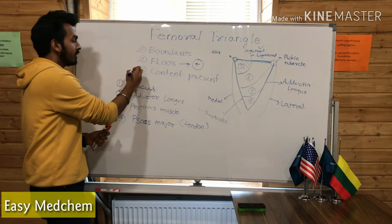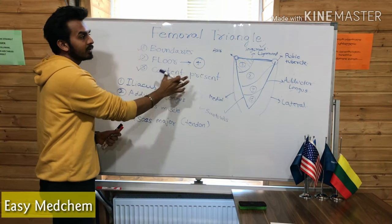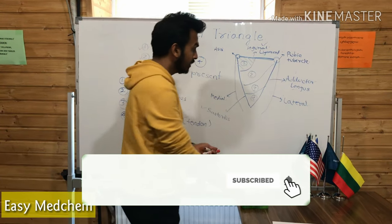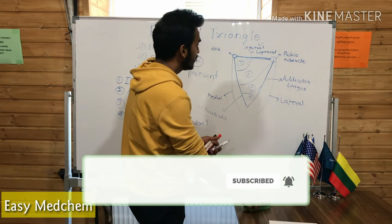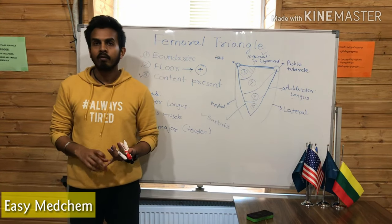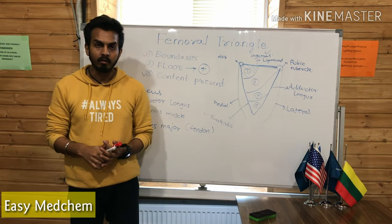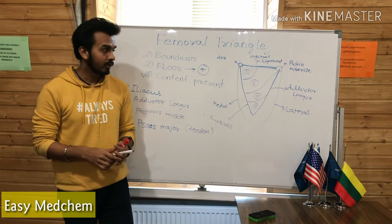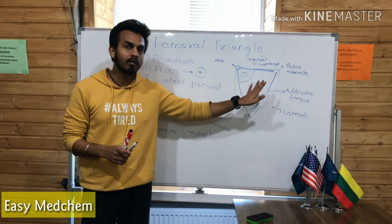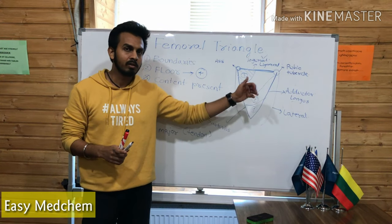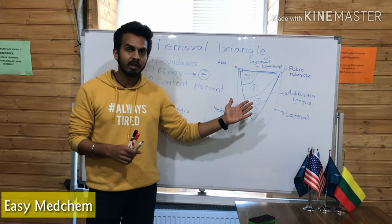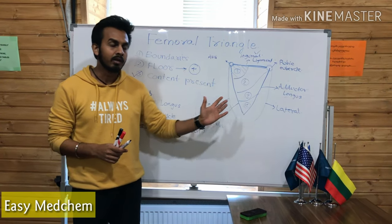Now next we are going to cover about the contents which are present in the femoral triangle. We are going to cover about the nerves, arteries, and veins which are present in the femoral triangle. The name itself suggests that if this is a femoral triangle, the nerve name is also the femoral nerve. The femoral artery is present here and the femoral vein is present here.